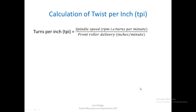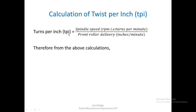Twist per inch (TPI) is calculated as spindle speed (RPM, i.e., turns per minute) divided by front roller delivery (inches per minute). Substituting spindle speed of 914 RPM and front roller delivery of 1902 inches per minute, the twist per inch inserted in the roving = 914 / 1902 = 0.48 TPI.